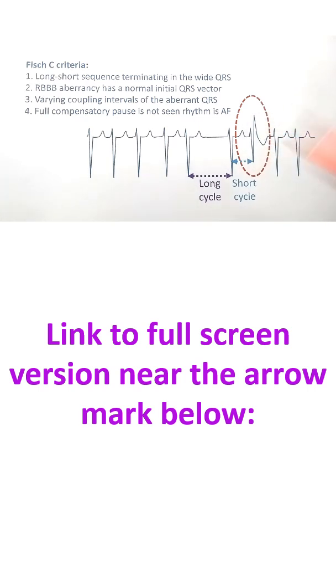The importance of this Ashman phenomenon is that this may be mistaken for a ventricular ectopic beat. In atrial fibrillation, when there is a ventricular ectopic beat, especially if the person is on digoxin, it is quite significant.